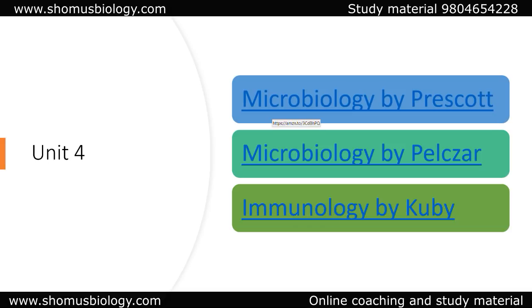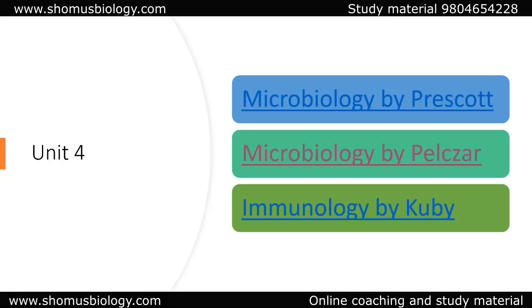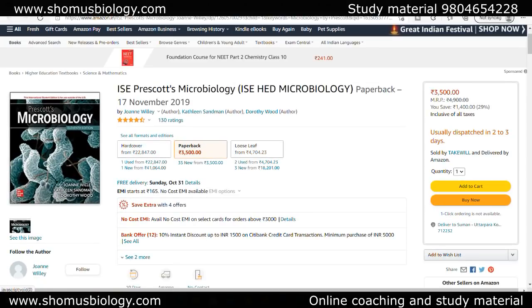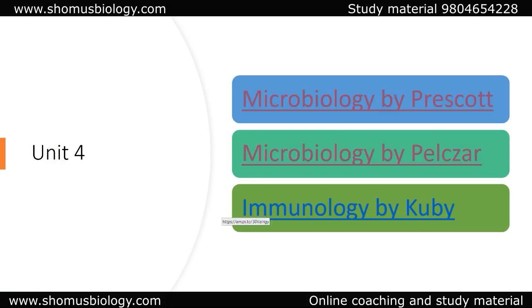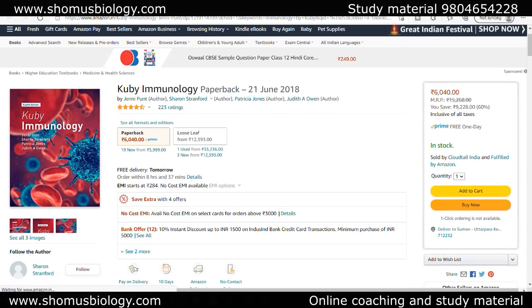For Unit 4, we have microbiology and immunology sections. Two microbiology books are listed: Microbiology by Prescott and Microbiology by Pelczar. If you have less time and just need to revise, Pelczar is a good short-note style book. If you want to prepare microbiology in depth, go with Prescott. For immunology, always go with Kuby Immunology — it takes a long time but it illustrates topics very beautifully.